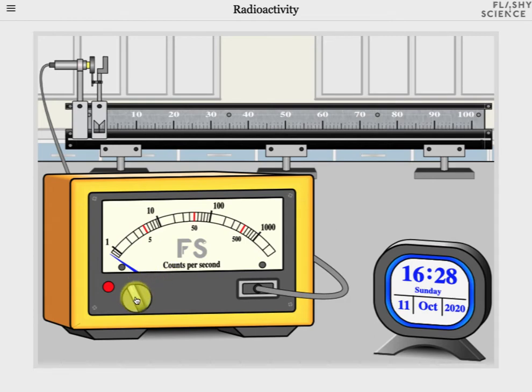To turn on the meter simply click on this switch and you'll see the power light goes green and the needle shows the live signal from the Geiger-Müller tube.